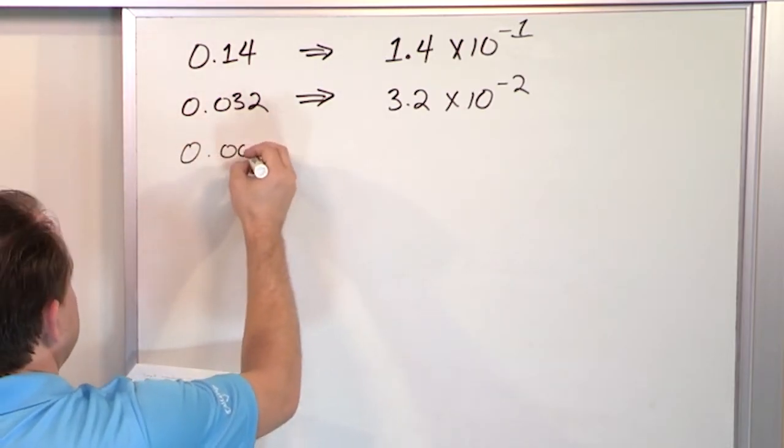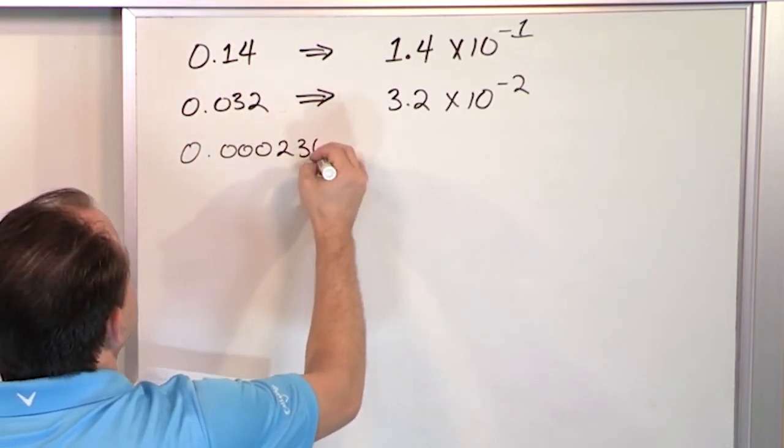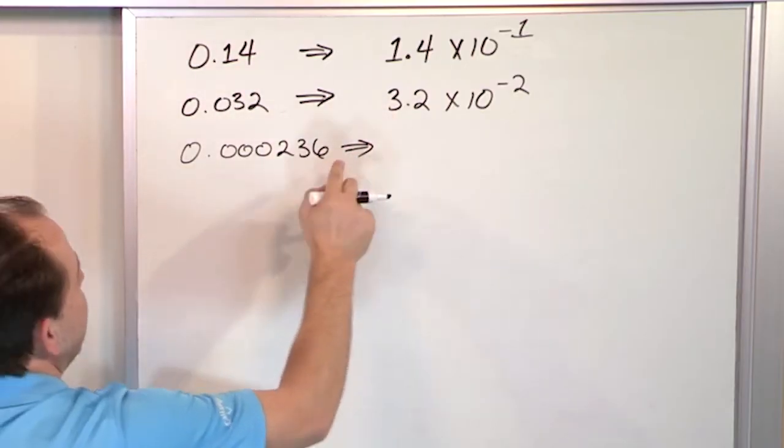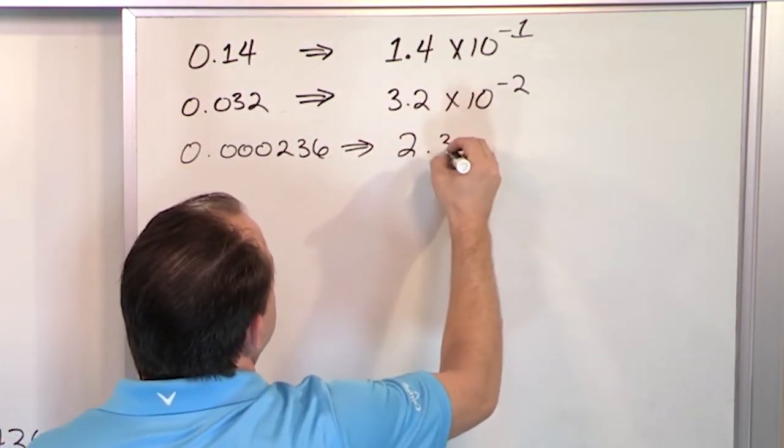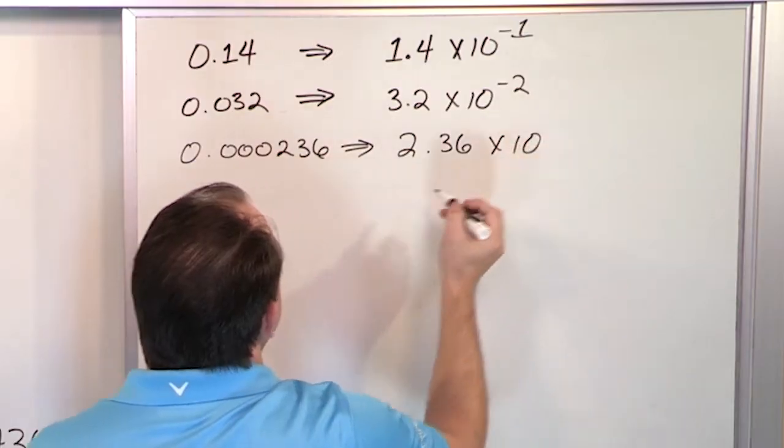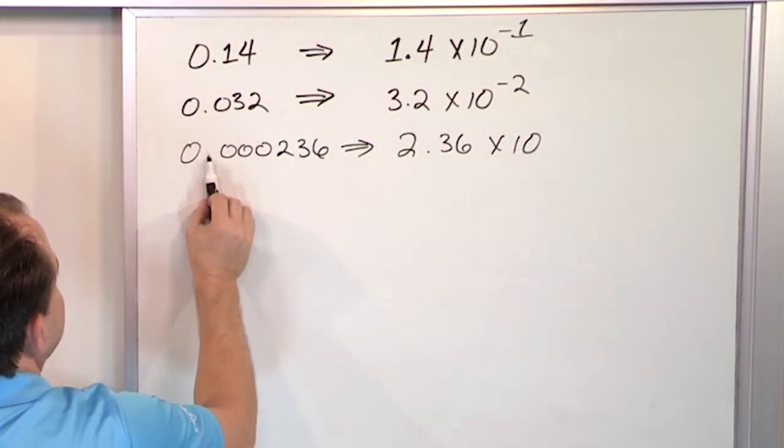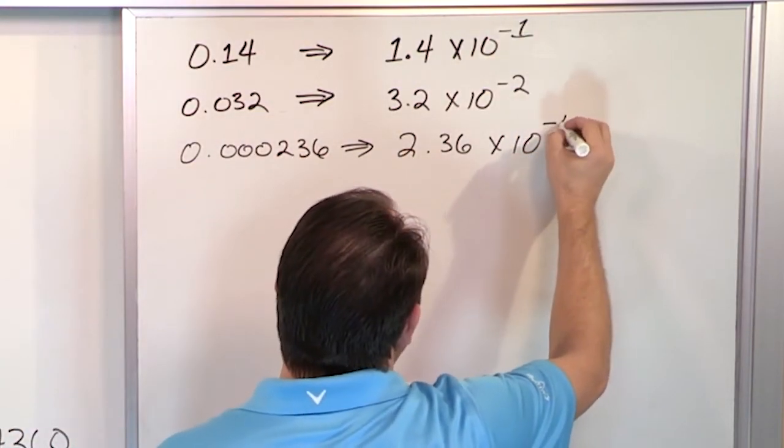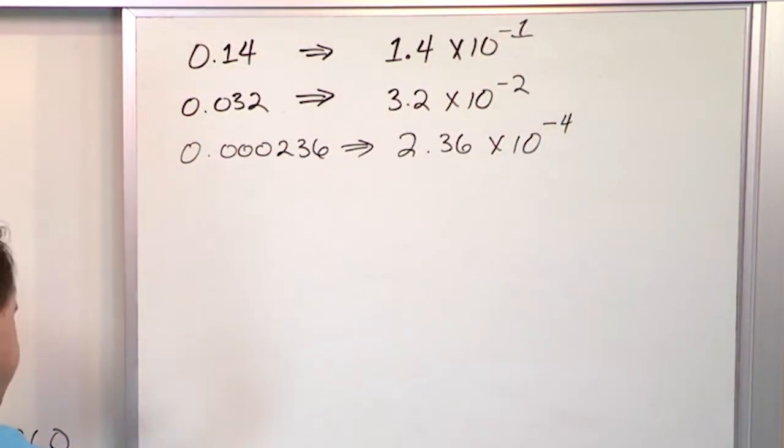What if I have 0.000236? I take all of my digits and I put the decimal after the first one, times 10. And if I start here, I'm going to go one, two, three, four, but it's not positive four, it's minus four because that shifts it to the left.